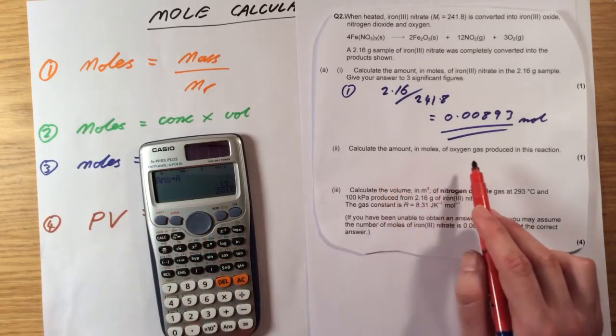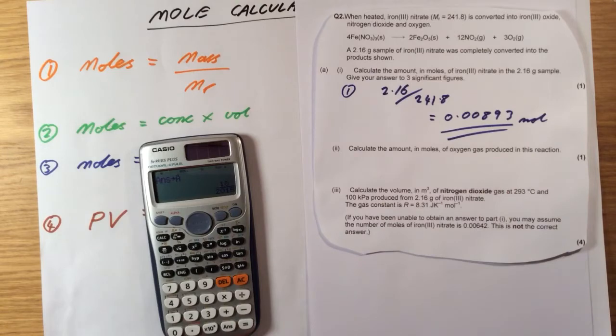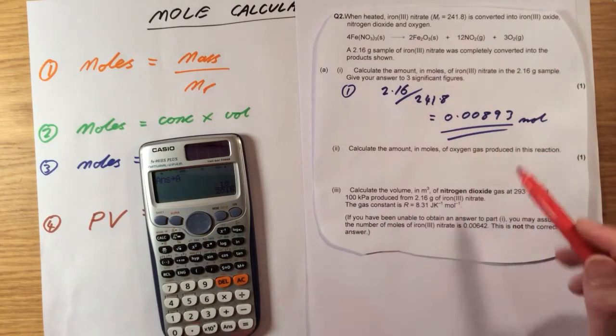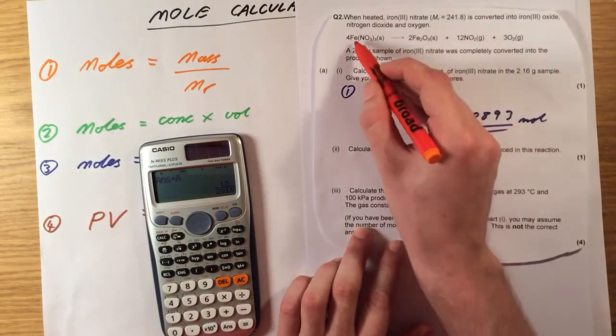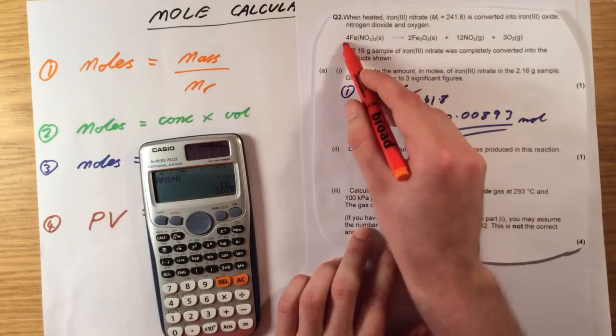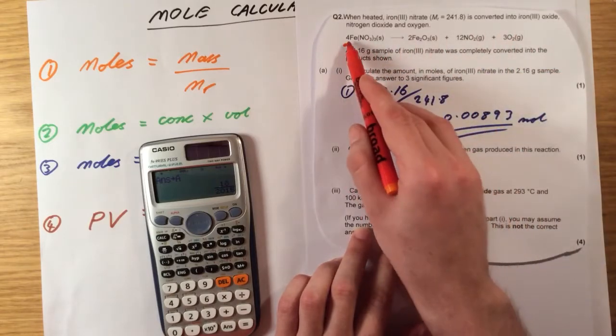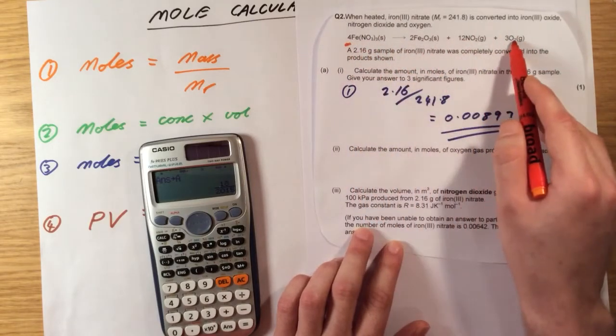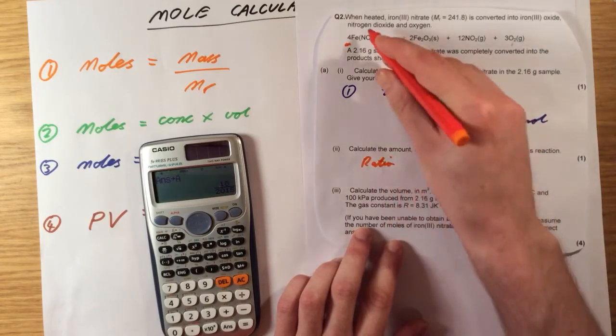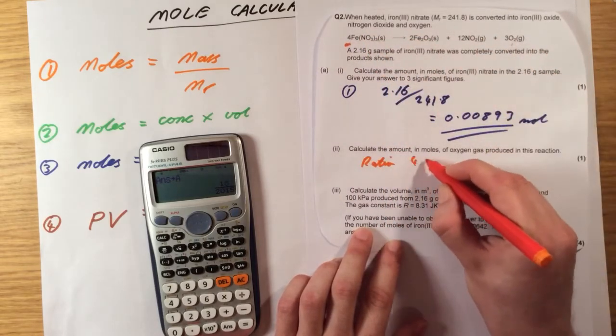Calculate the amount in moles of oxygen gas produced in this reaction. I'm not told anything about the oxygen that's produced, but what I am given is the fact that the ratio of iron nitrate to oxygen is 4 to 3. So if there's 4 moles of this reactant, I will produce 3 moles of oxygen.